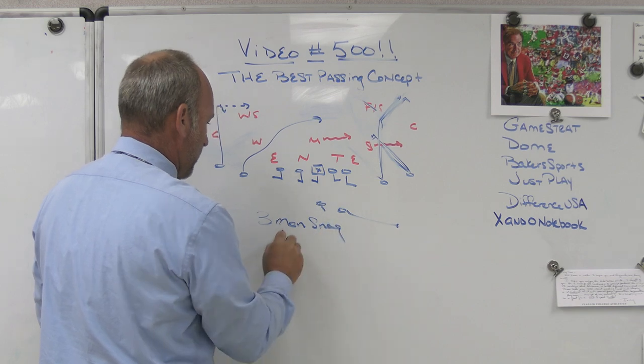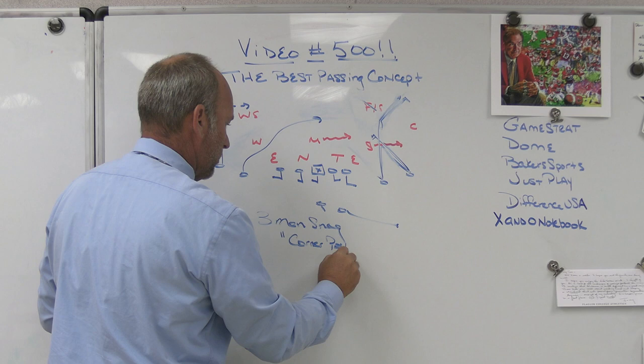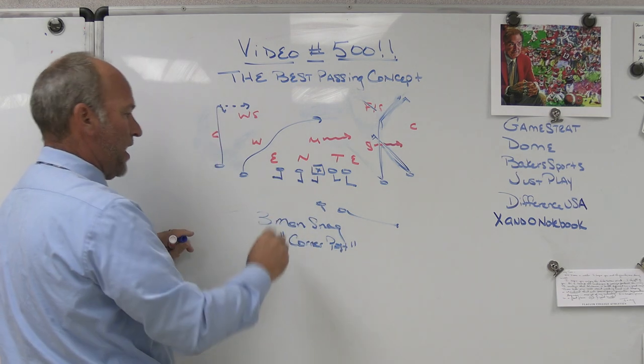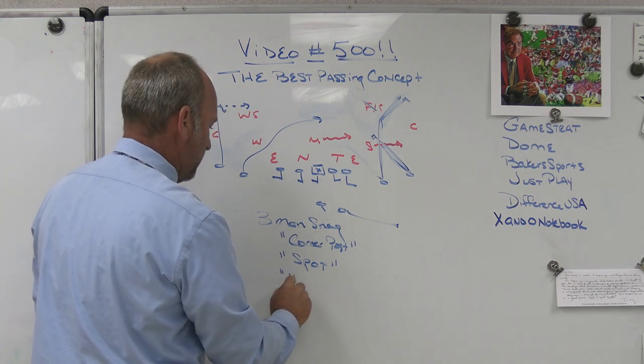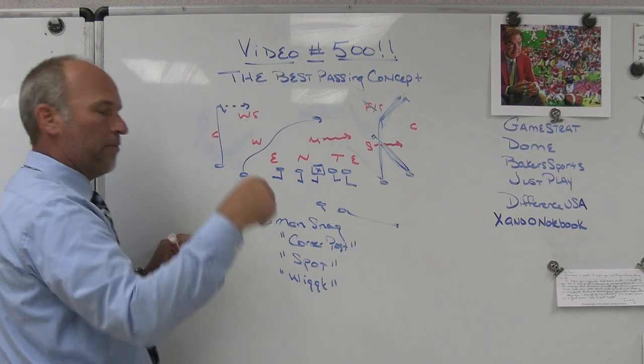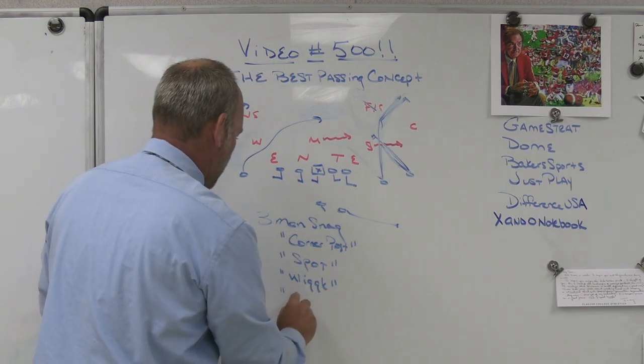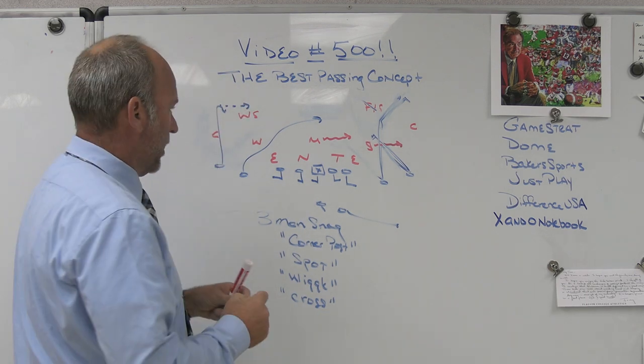We're a three man snag. And then we tag corner post. So we're a three man snag. We tag corner post. Then we tag the spot route to make it true spacing. Then we tag the wiggle route, which is the snag and going. Now we've got another middle of the field shot concept. Then we tag the backside and we run the wide cross concept.